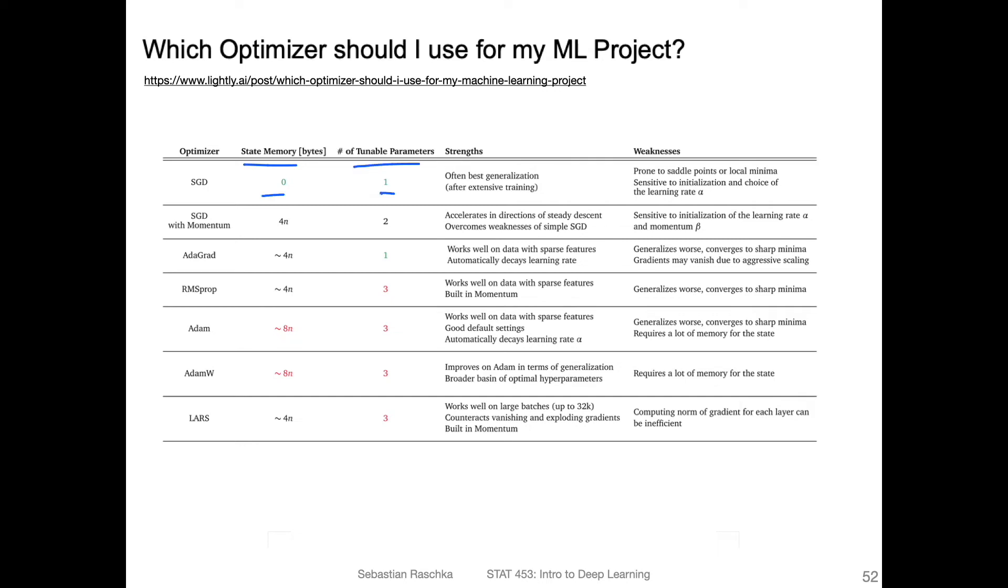Of course, SGD is the simplest one. When we add an additional number of parameters here and also tunable parameters, one is the learning rate and the other one is the momentum term, the beta. They also say that it's the best for generalization, but requires extensive training, so requires more tuning for the learning rate, but also more epochs.